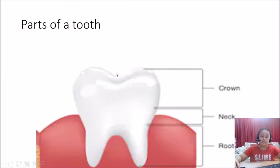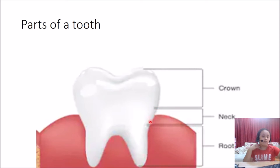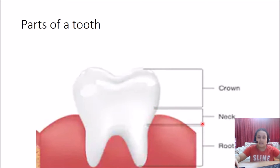Now let's see the parts of a tooth. The top part, which is the sharpest part, is called the crown. The part of the tooth that narrows — like how our neck is smaller than our face — is called the neck of the tooth. When it goes straight and forms two legs on each side, that is called the root.